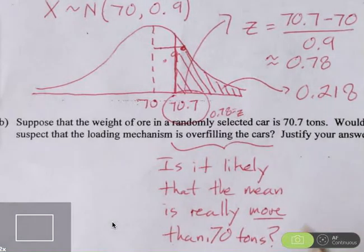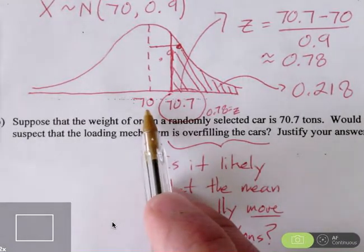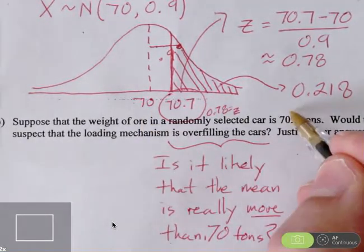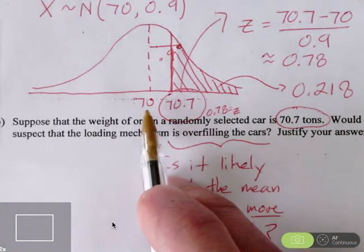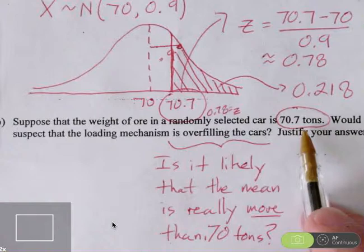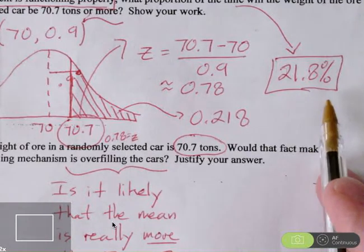That's really what this question is asking. And the truth is, there's no reason to think that the actual mean of the process is any more than 70. And ultimately, that's because this 70.7 tons, even when the mean is set to 70, 70.7 tons or more than that will be observed 21.8% of the time. That's one out of every five cars.